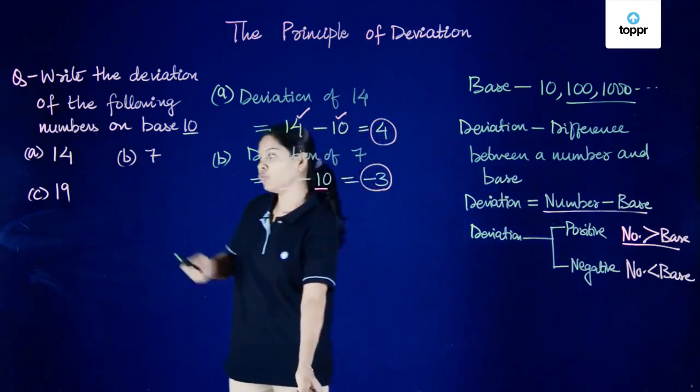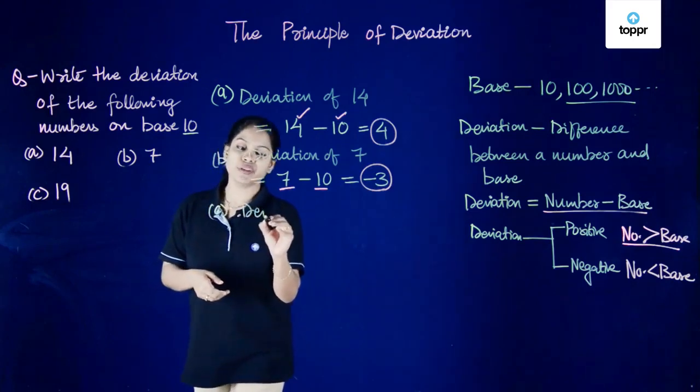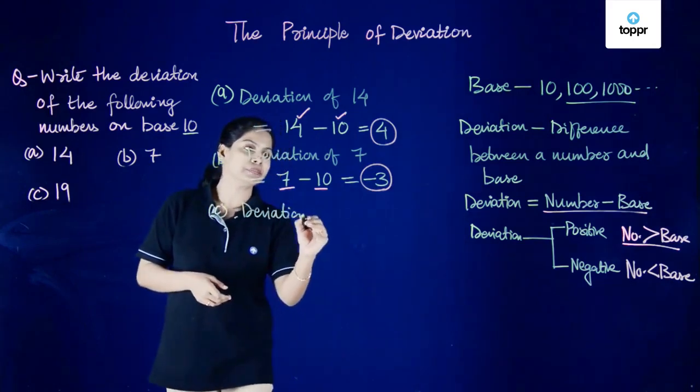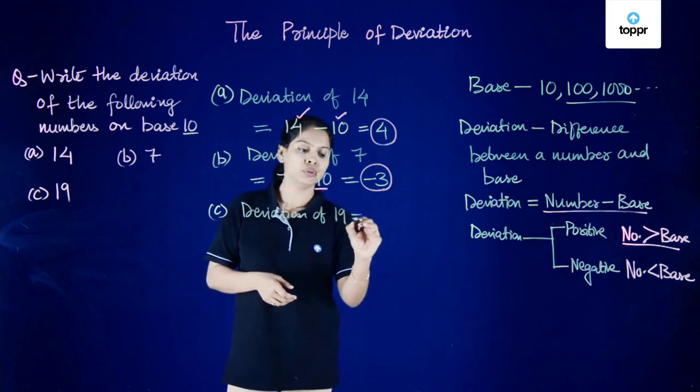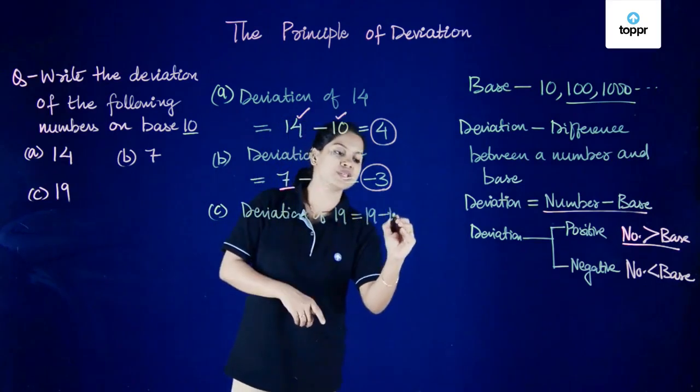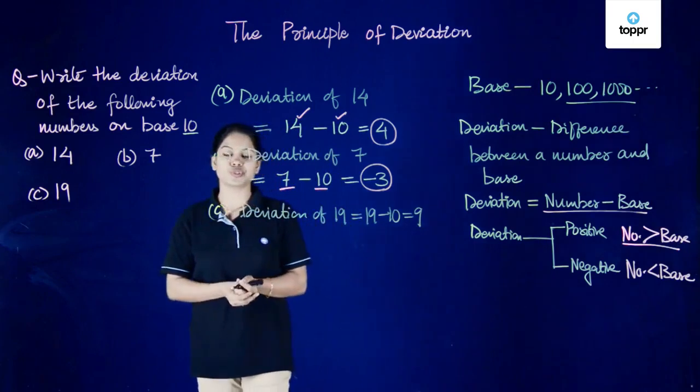Now let's move on to bit C and find the deviation there. Deviation of 19 is equal to number 19 minus the base 10, that's equal to 9. Here the deviation is positive.